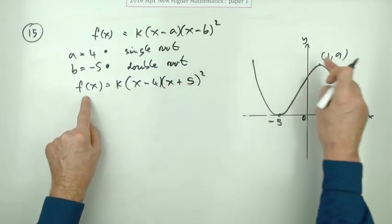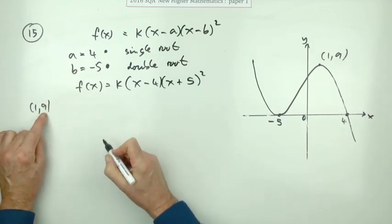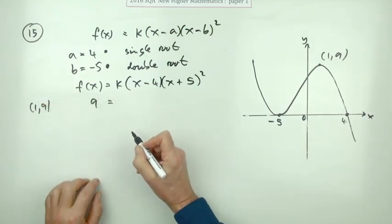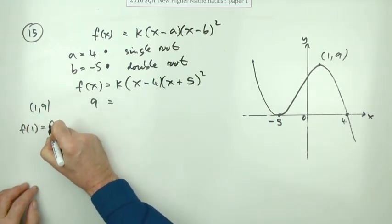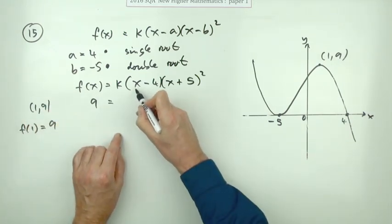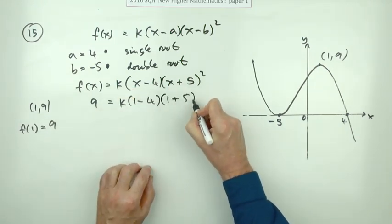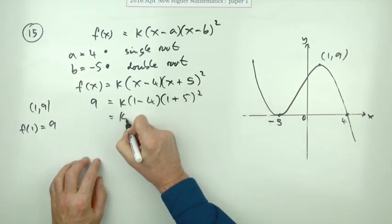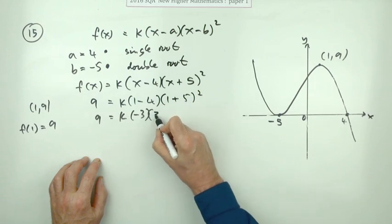And I've got that here. If you put in one, the answer is nine, f(x) is nine. Another way of writing that would be f(1) equals nine. Put in one, so it'll be one minus four, put in one, so it'll be one plus five. Now I'm just going to work this out. That's negative three, and that's six squared which is 36.